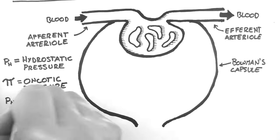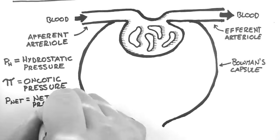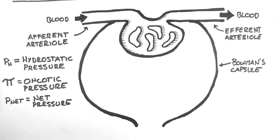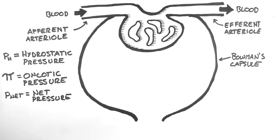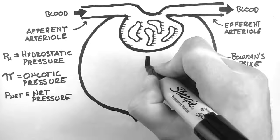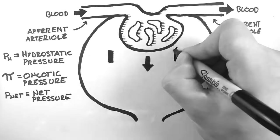Also, we'll use these forces to determine the net pressure, moving fluid out of the glomerulus and into the Bowman's capsule. I'll denote this P-net. So there are three forces acting here.